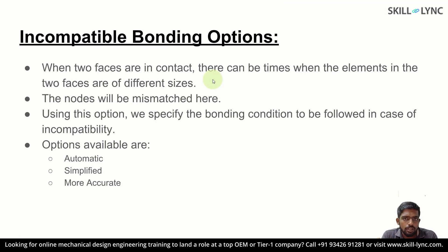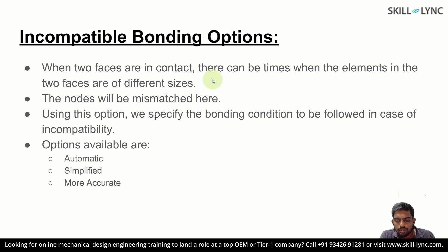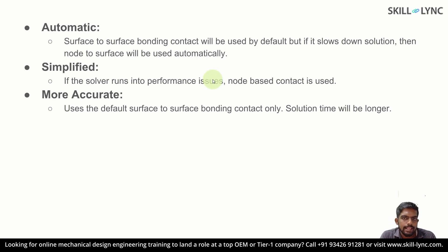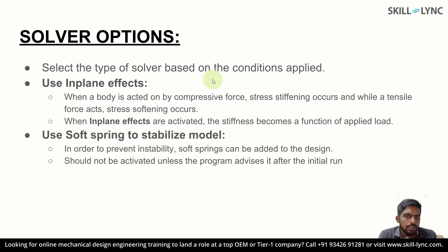Regarding incompatible bonding options: if your model has several contacts between parts, nodes may not be perfectly matched for force transfer. SOLIDWORKS has algorithms to tackle this, providing three options. The automatic option — the default — considers both surfaces as a whole to define contact, but if this is slower, the solver automatically chooses node-to-surface. The simplified option uses node-based contact definition. The more accurate option takes longer but yields better results using surface-to-surface contact.